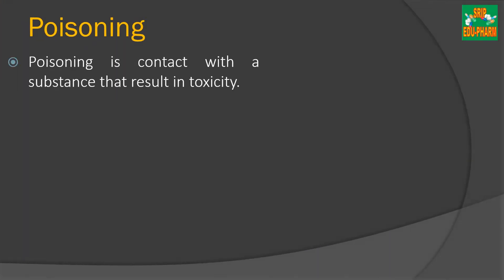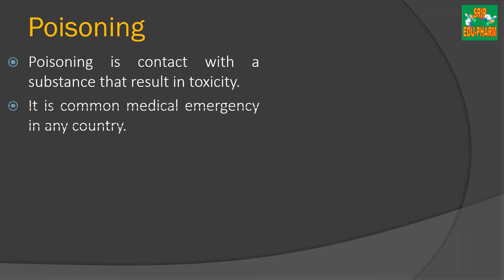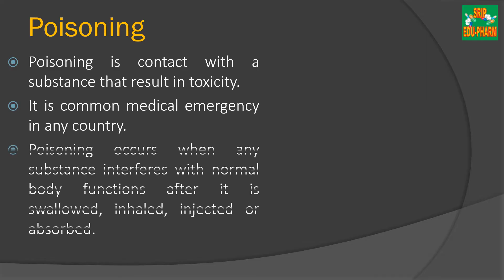Let me define poisoning. Poisoning is the effect of any poison, or the effect produced in contact with any substance that results in toxicity. It is a serious and common medical emergency in any country. It generally occurs when any substance interferes with normal body function after it is swallowed, inhaled, injected, or absorbed.